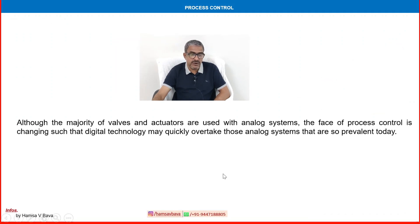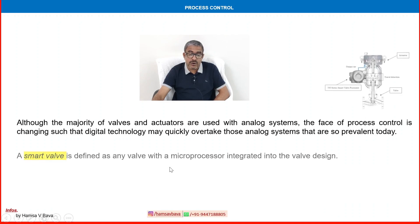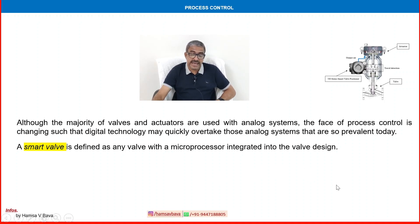Although the majority of valves and actuators are used with analog systems, the face of process control is changing such that digital technology may quickly overtake those analog systems that are so prevalent today. New generation digital technologies are taking over and replacing analog systems, which brings us to the coming of smart valves and digital positioners in advanced process control.